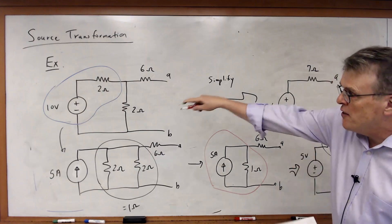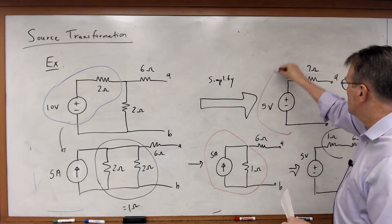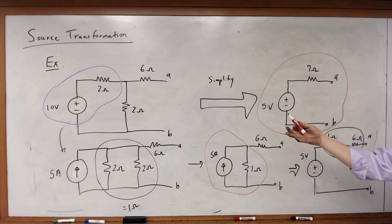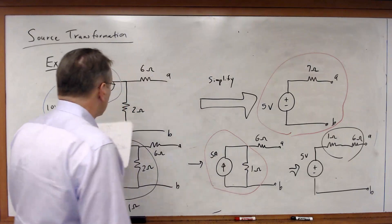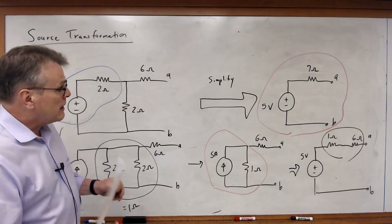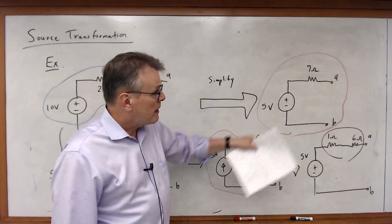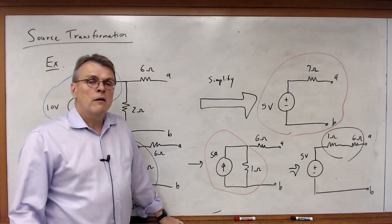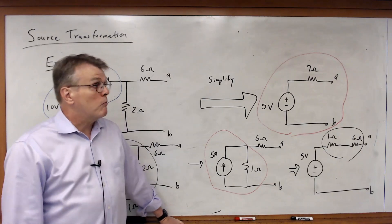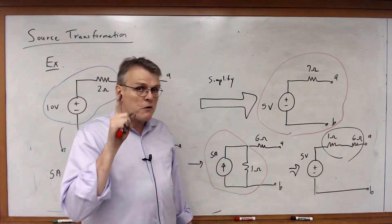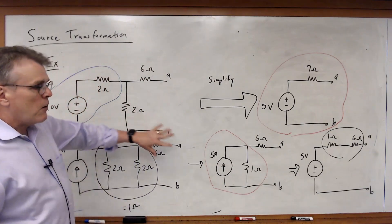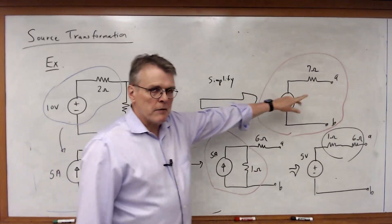The 1 ohm and 6 ohm are in series, so I combine them and get my answer: a 5 volt source in series with a 7 ohm resistor. I can take an arbitrarily complex circuit composed of resistors and independent sources, go through step by step, and wind up with a single voltage source in series with a single resistor, or a single current source in parallel with a single resistor.